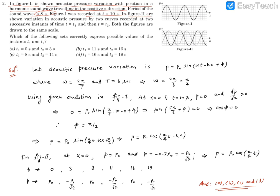In the second figure, the pressure variation curves are shown. There are two curves shown at successive instants of times t1 and t2. And both these figures have been drawn in the same scale. Which of the following states correctly express possible values of t1 and t2? That's what we need to find out.